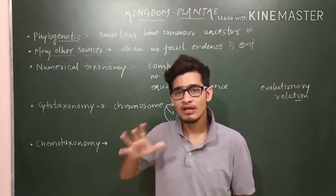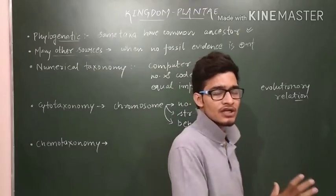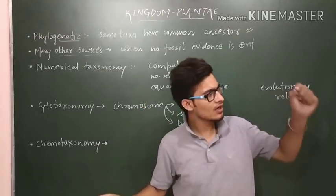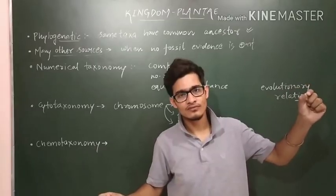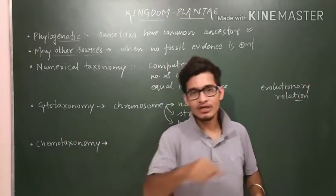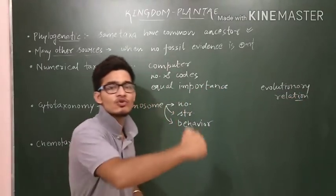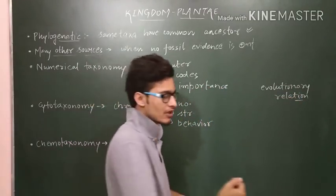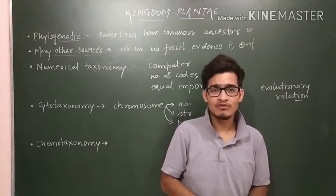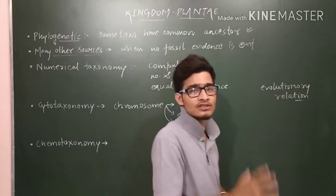Phylogenetic classification helps you trace the basics of a particular individual — where it originated and where it is now. All individuals in between follow a particular scheme of evolution. Just as you will study in the 7th chapter of 12th class on evolution, how the evolution of man has taken place.